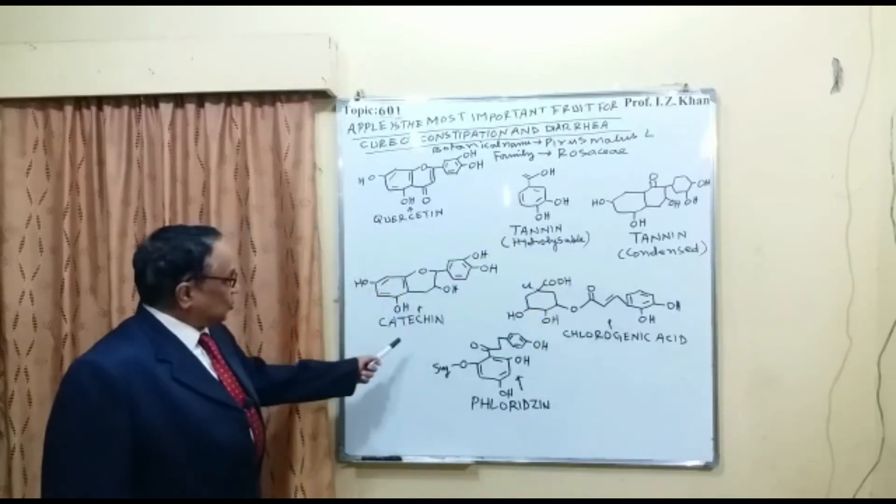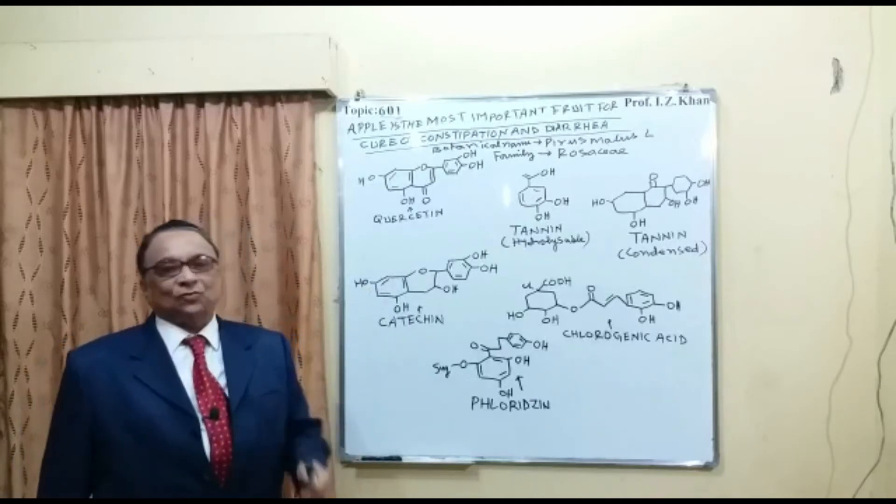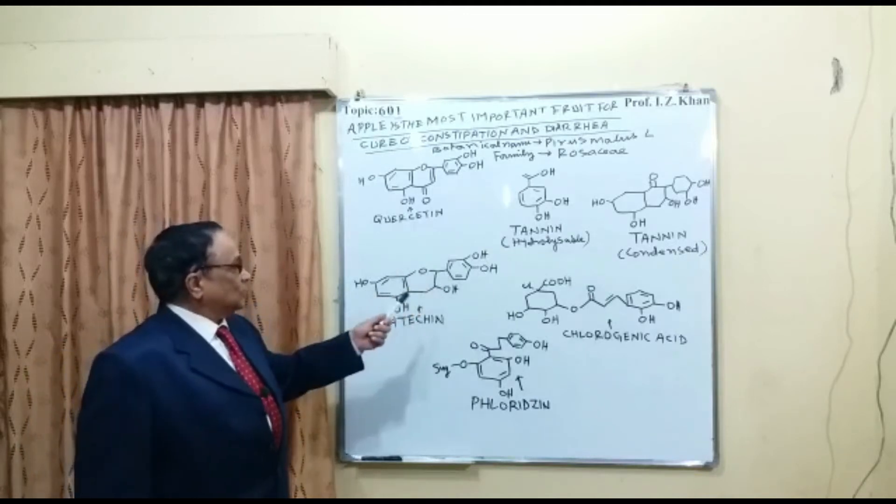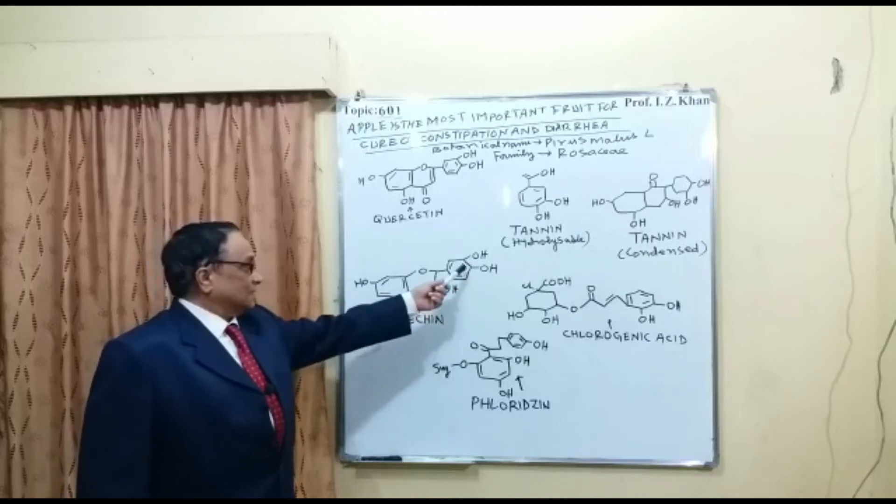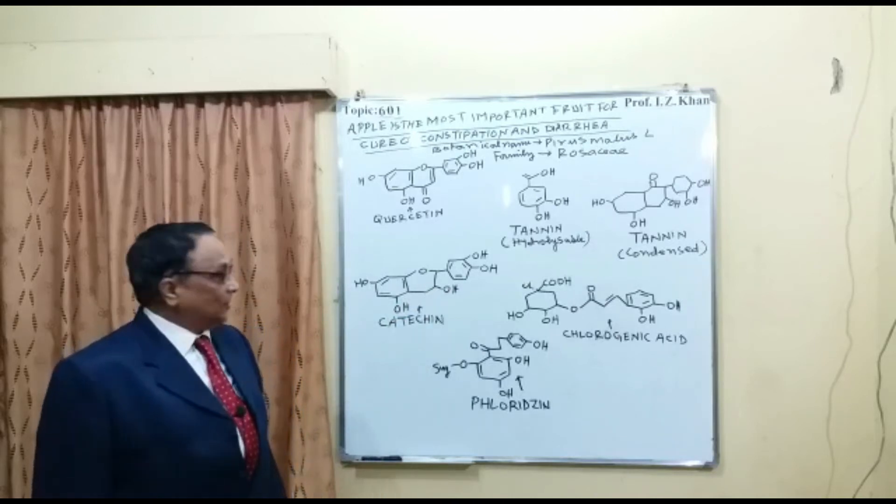The third group is catechin. So apple is also rich in catechin. Catechin is also one of the phenolic nucleus, where it has benzopyrone nucleus with four phenolic groups attached. Catechin is also very good antioxidant and anti-inflammatory.